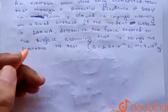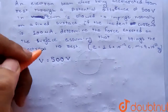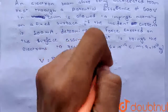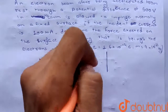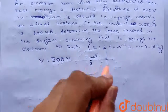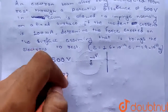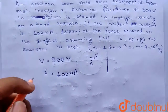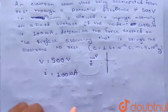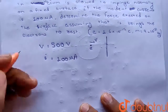पहले तो हमने potential difference V बराबर 500 volts से electrons को accelerate कराया, उसके बाद जो एक fixed surface है उस पर impinge कराया normally। तो एक surface है, उस पर एक electron है जो V velocity से आएगा और normally टकराएगा। बाद में एक force लगेगा — total incident current I बराबर 100 micro ampere है, और electron rest पर आ जाता है।